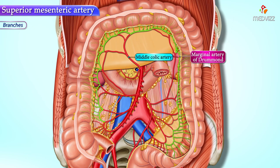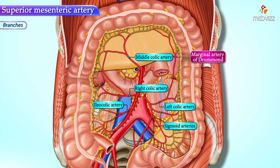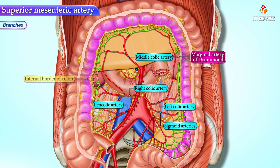The marginal artery of Drummond is formed by anastomoses between the terminal branches of the superior mesenteric artery — the middle colic, right colic, and ileocolic arteries — and the terminal branches of the inferior mesenteric artery — the left colic and sigmoid arteries. Together these anastomose to form the marginal artery that runs along the internal border of the colon.